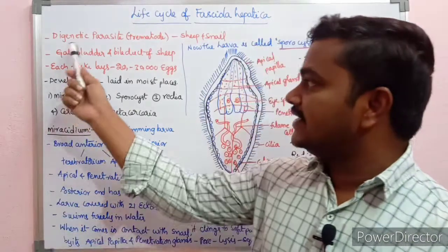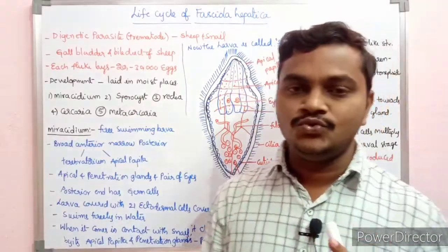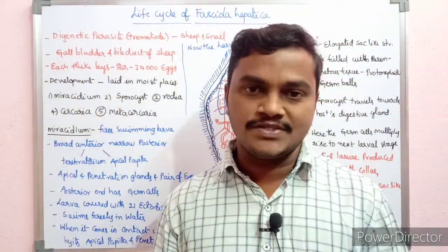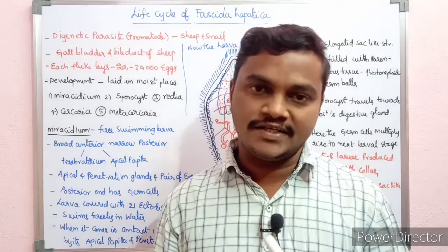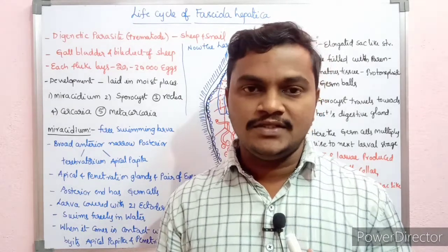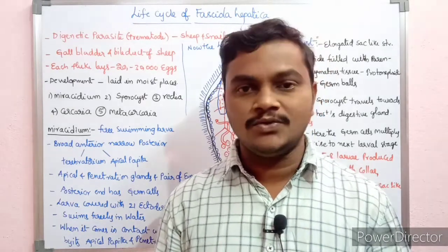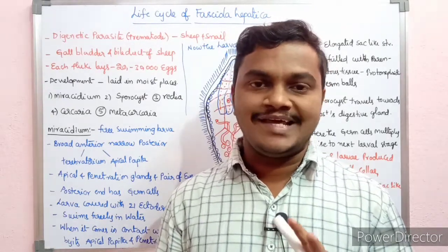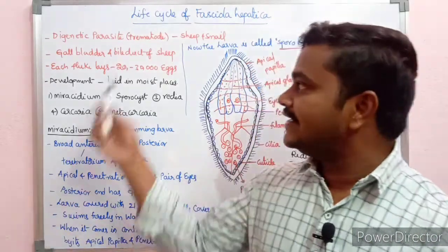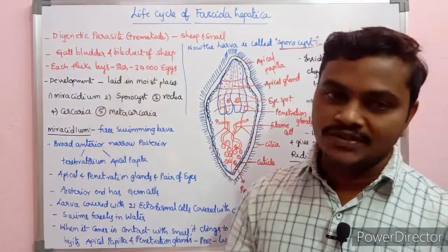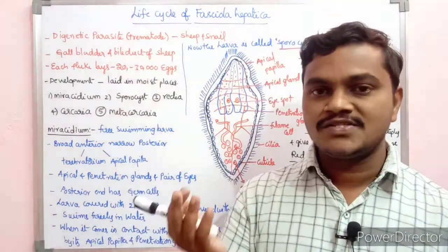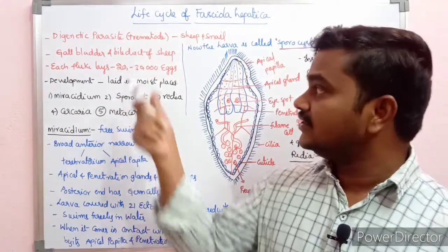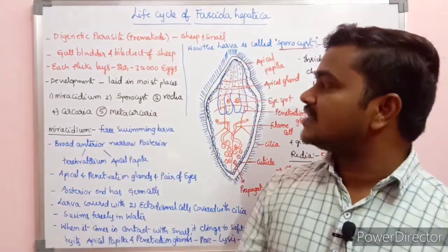Fasciola hepatica is a digenetic parasite. Two hosts will be completed in the life cycle: the snail, and sheep and goat. This is a Trematode.